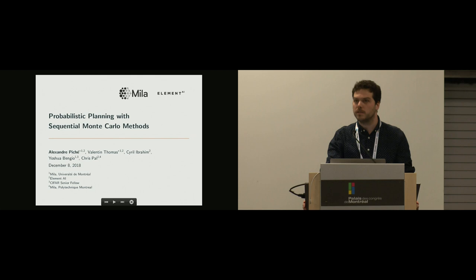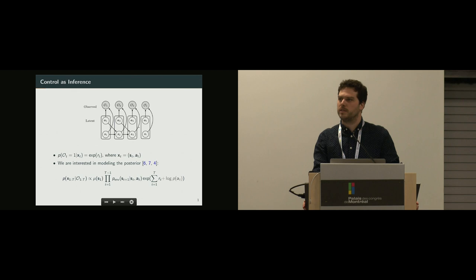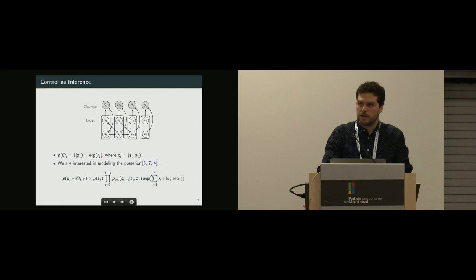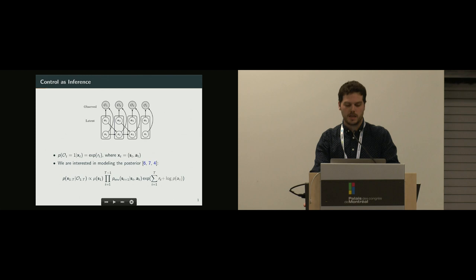First, let's review control as inference. For control as inference, we introduce a binary variable, the optimality variable, and the probability of being optimal for a given state action pair is given by the exponential of the reward. And usually we're interested in modeling the posterior.